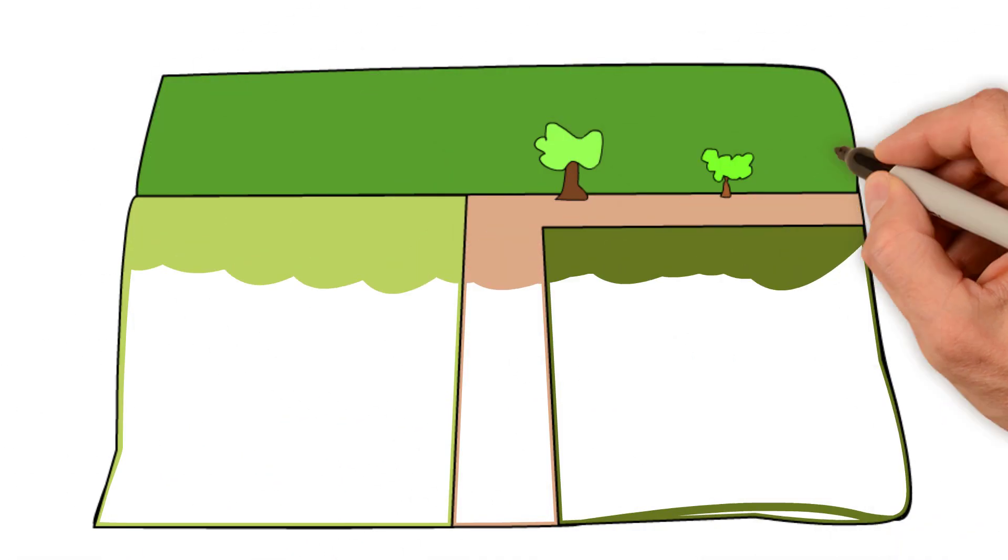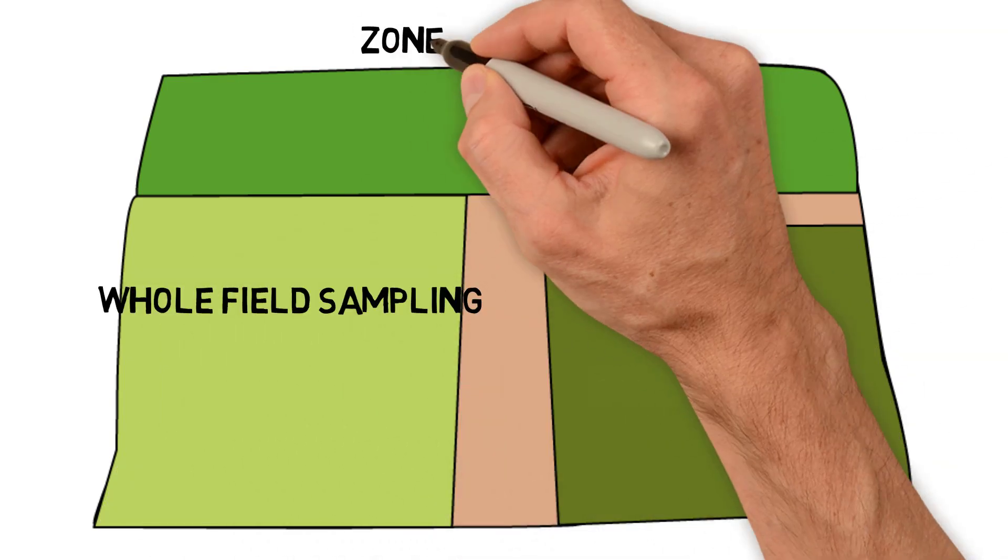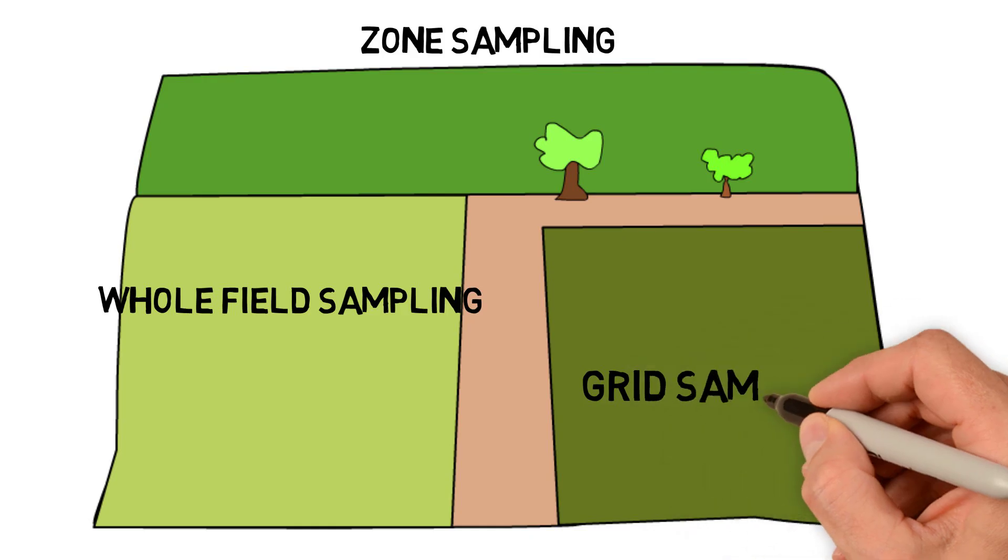When it comes to actually soil sampling, there are three different methods that you can use: whole field sampling, zone sampling, and grid sampling. There's no one best method. It really depends on the field that you're sampling and what you're really looking for.